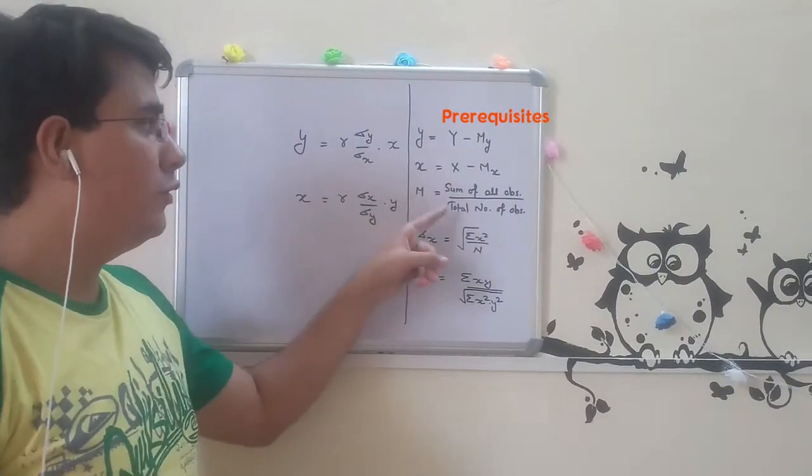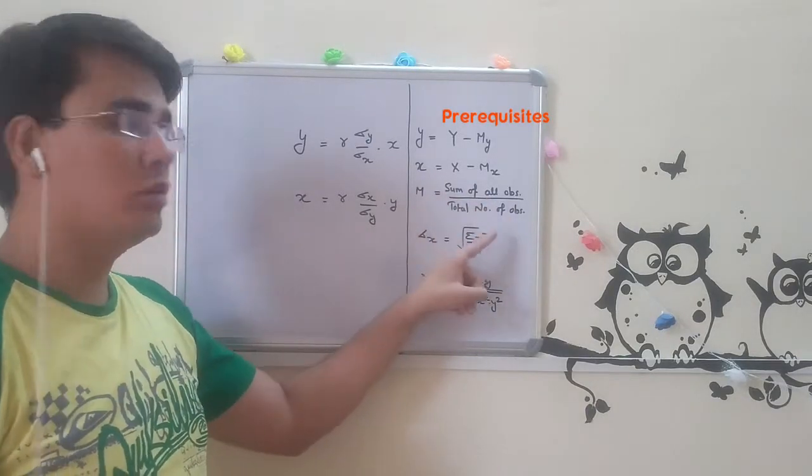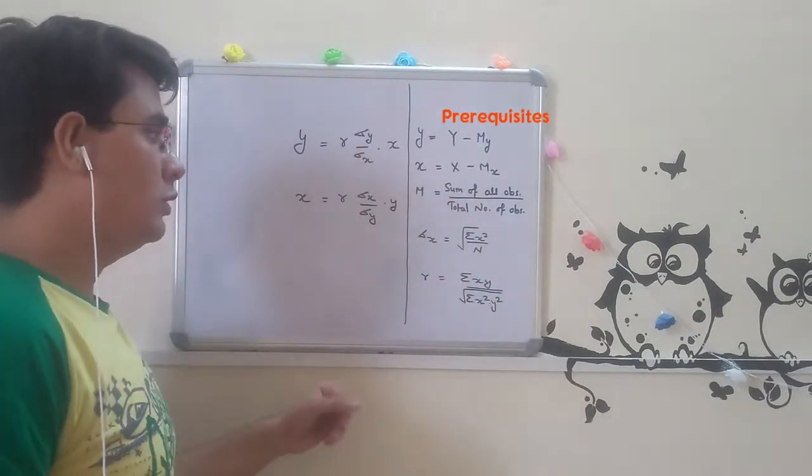Wait for few seconds. Mean formula is sum of all observation upon total number of observation. Basic formula.